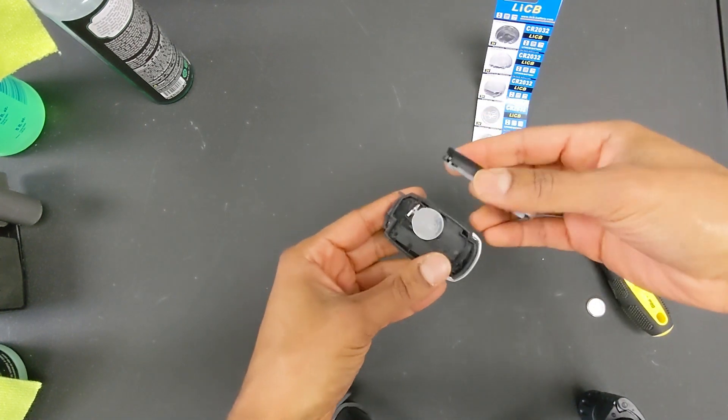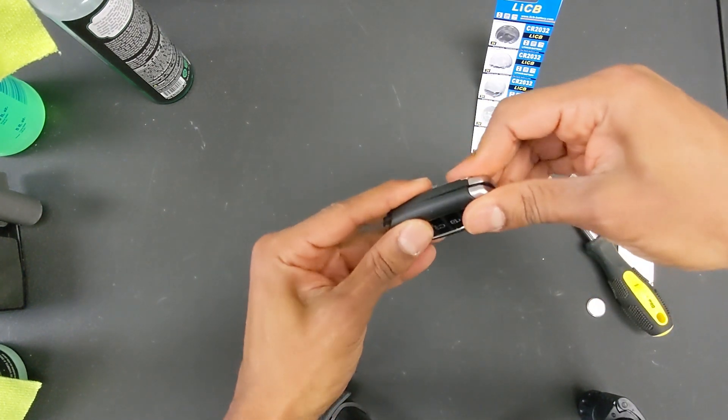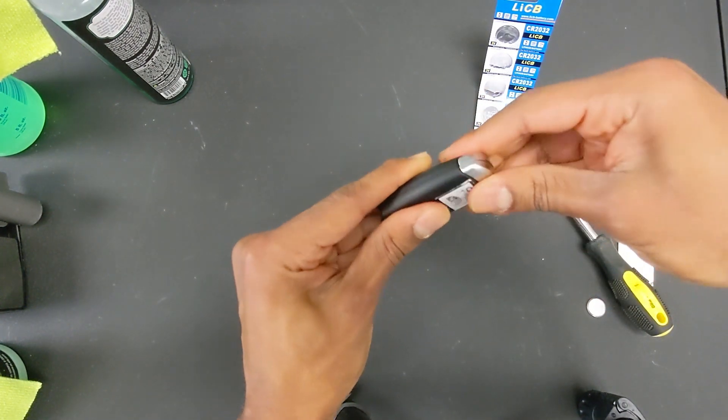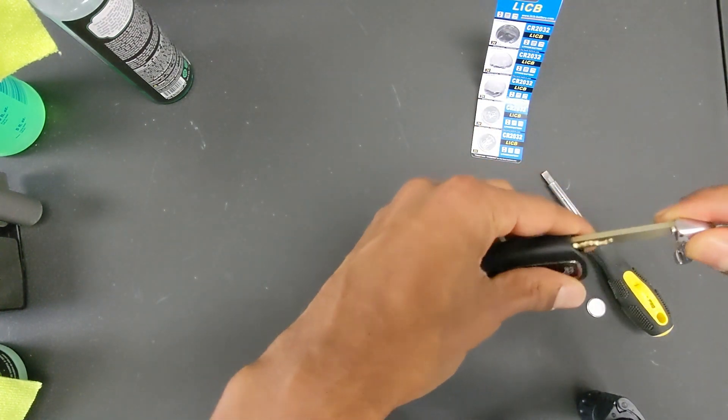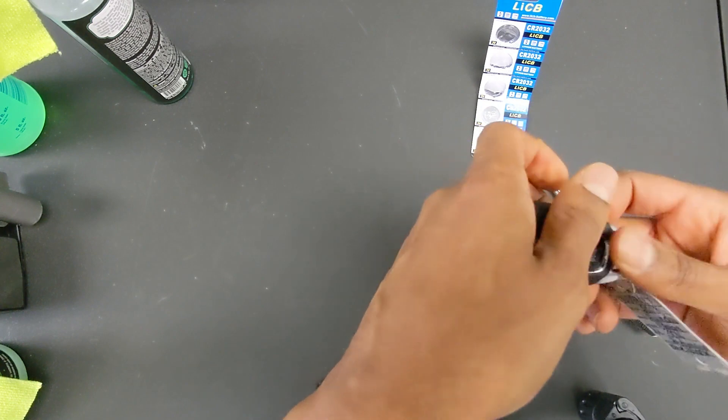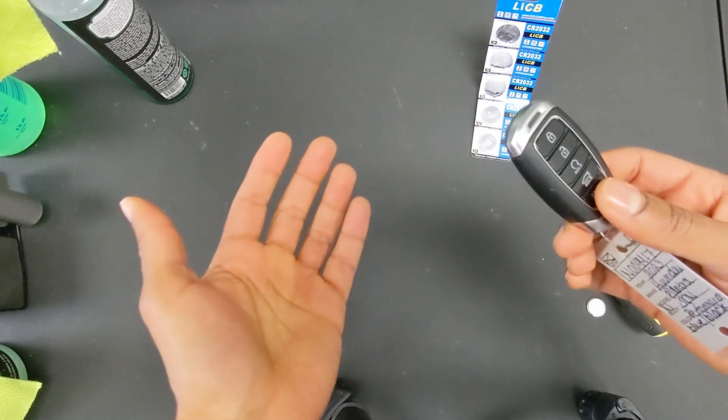Then just take the two sides, combine them, snap them together, get your physical key, slide it back in, test it, and you're done.